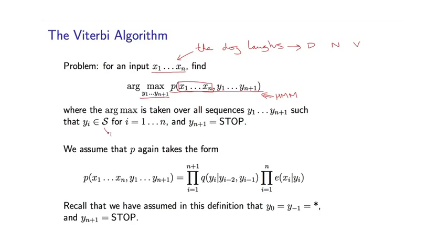Okay, so again, s is going to be defined to be the set of possible tags. Let's say, for the sake of argument, we just have these three tags here, d, n and v. And so we're going to search over all valid tag sequences where yi is in s for i equals 1 to n and yn plus 1 is equal to stop.